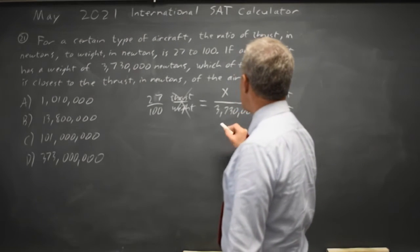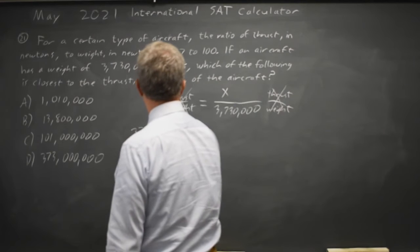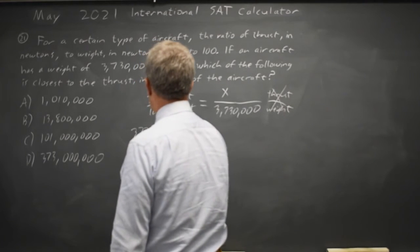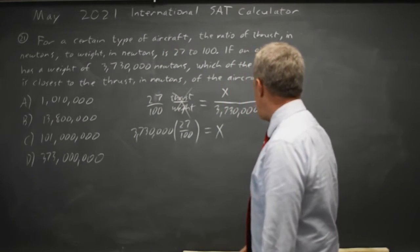If I multiply both sides by 3,730,000 I get x by itself on the right.